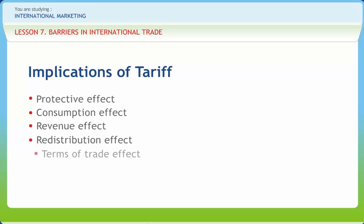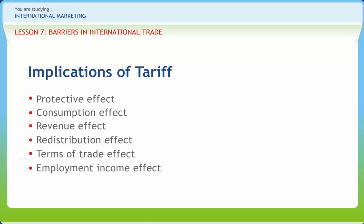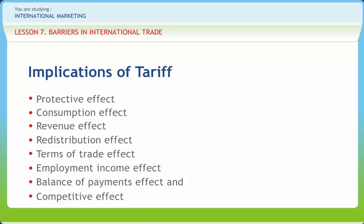Fifth is the Terms of Trade Effect — the effect of a tariff on the terms of trade depends on whether its burden falls wholly on the exporting or importing country, or is shared by both. Sixth is the Employment or Income Effect — tariff duties reduce imports by raising their price, obliging consumers to transfer demand to domestic substitutes, which raises employment and incomes in the domestic economy. Seventh is the Balance of Payments Effect — the relationship between balance of payments and tariffs is neither simple nor direct. Eighth is the Competition Effect — the competitive effect of a tariff is really an anti-competitive effect, but tariffs can be used to offset discriminatory practices on the part of foreign suppliers.